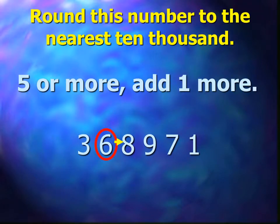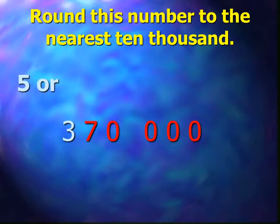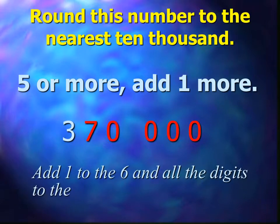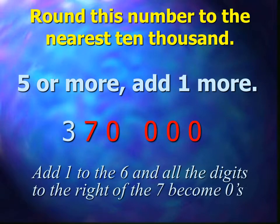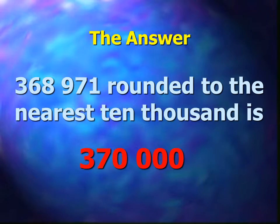Five or more, add one more. The eight is larger than four, so we need to add one to the digit six. We add one to the six and all the rest of the digits to the right of the seven now become zeros. Therefore, 368,971 rounded to the nearest ten thousand is 370,000.